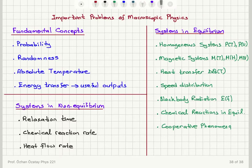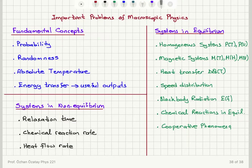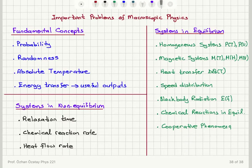Before we continue further, it's a good idea to look at the fundamental concepts and what we are trying to achieve by describing systems using statistical methods. In the fundamental concepts, we are basically using probability ideas to describe macroscopic systems in a systematic way. Probability is another name for relative frequency of an event, and it is related to the number of configurations.